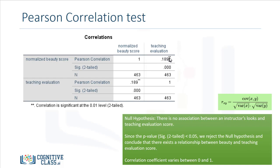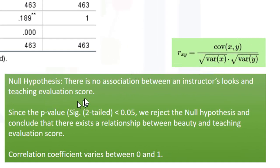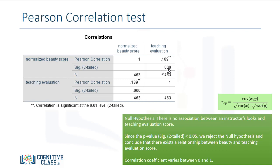The output from SPSS puts two asterisks next to the correlation value of 0.189, indicating that the correlation is significant at the 0.01 level. The formula for the Pearson correlation test is shown here. The null hypothesis is that there is no association between an instructor's beauty score and their teaching evaluation score. The p-value for the two-tailed test is less than 0.05, so we reject the null hypothesis and conclude that there exists a relationship between beauty and teaching evaluation score. The correlation coefficient value varies between 0 and 1.